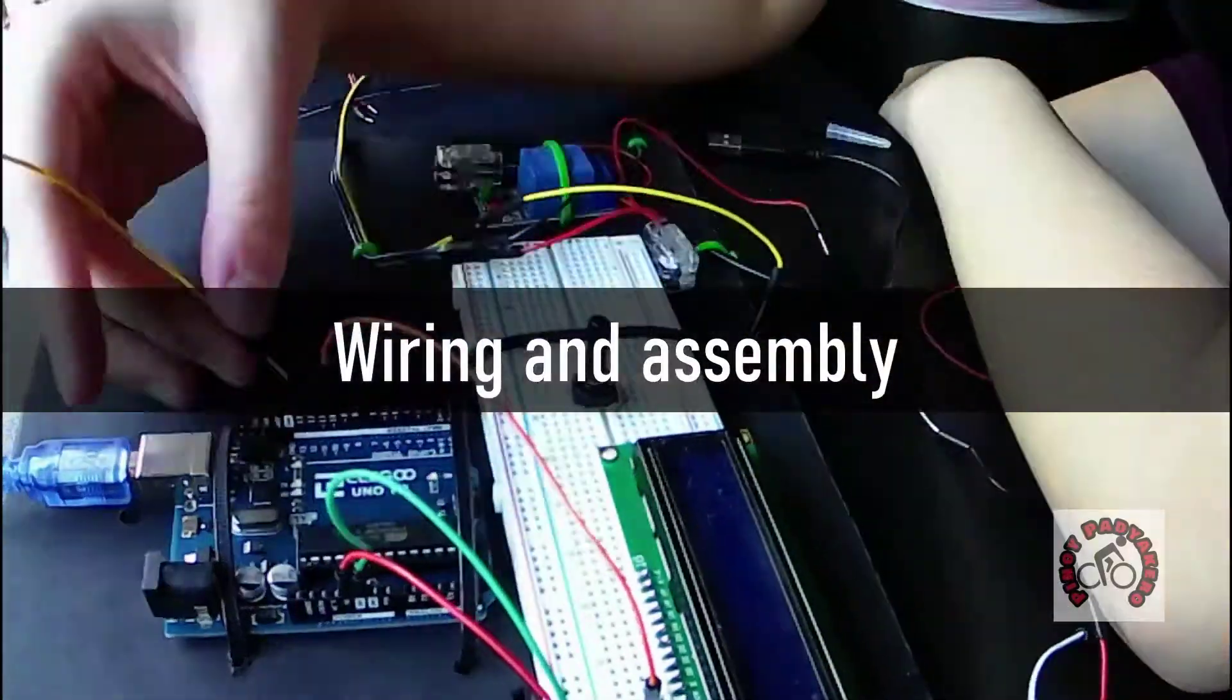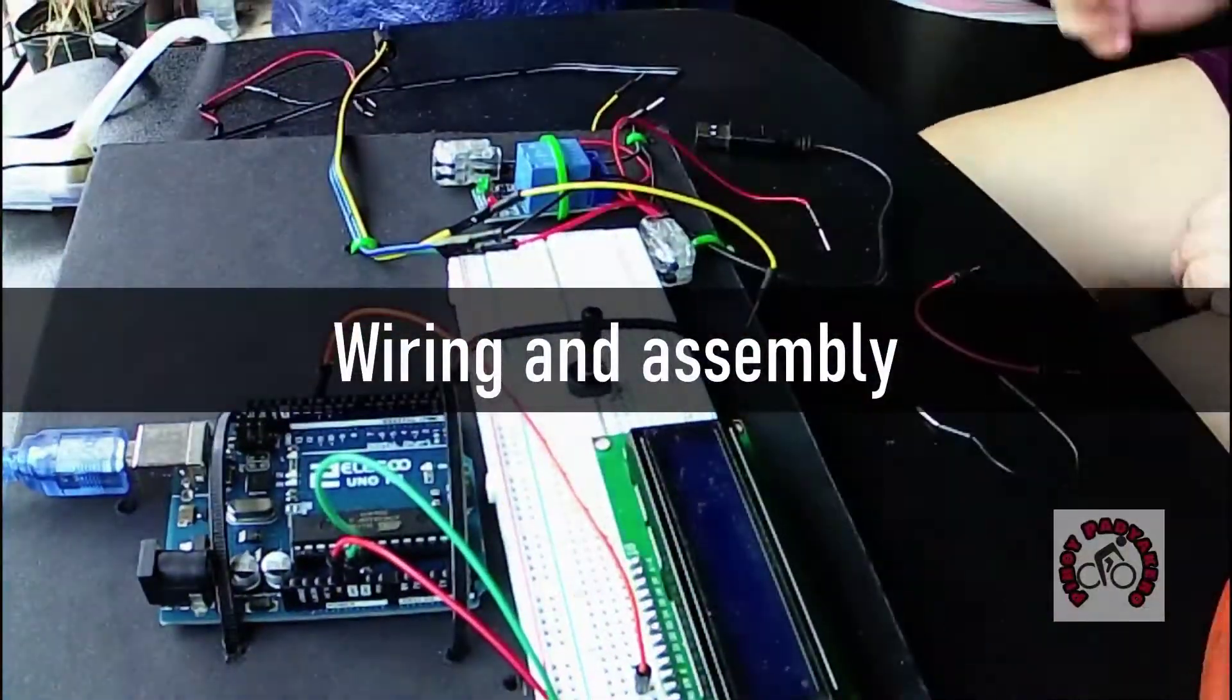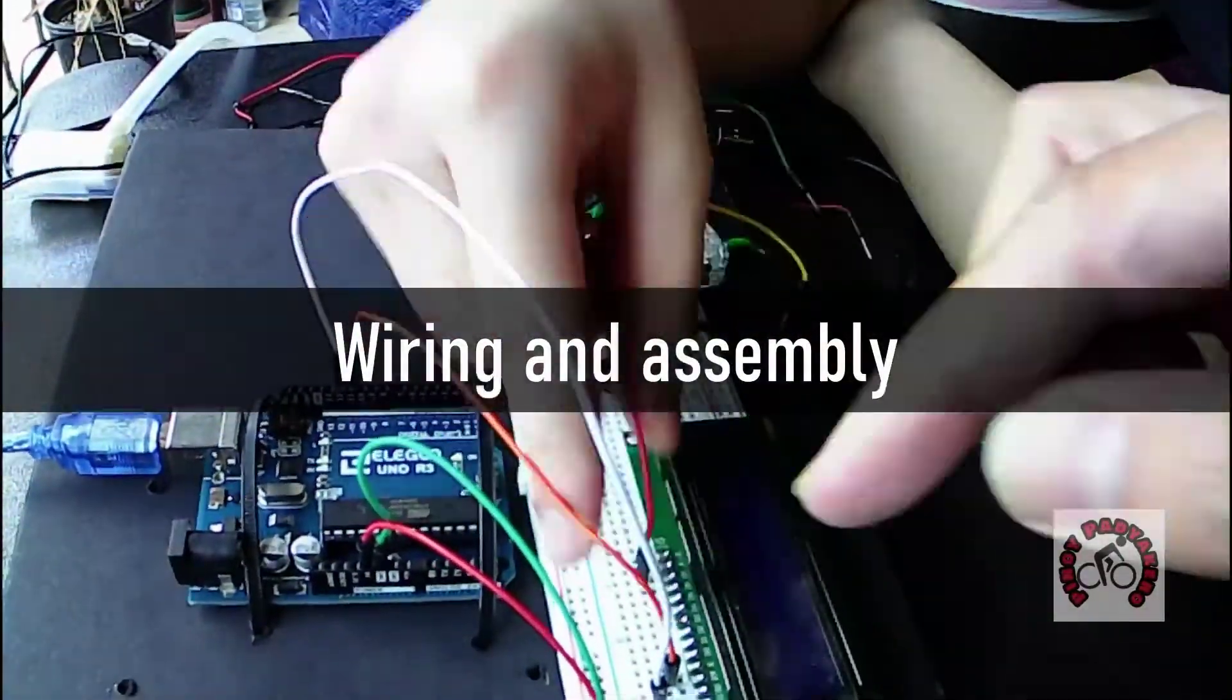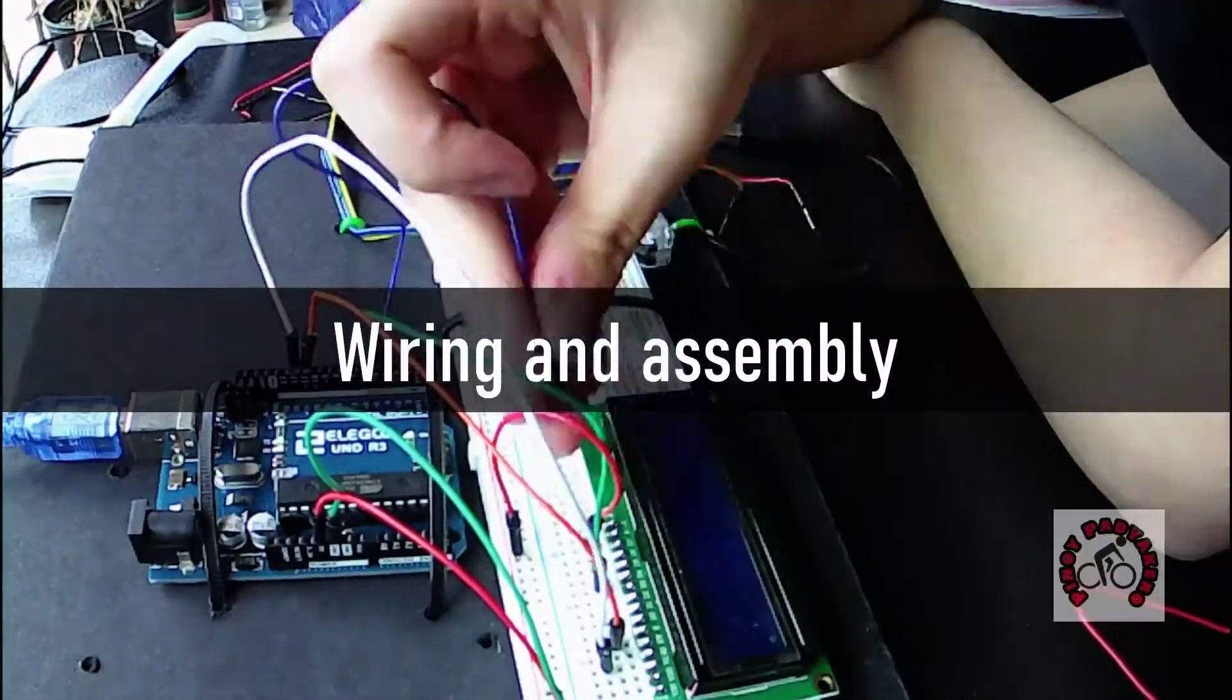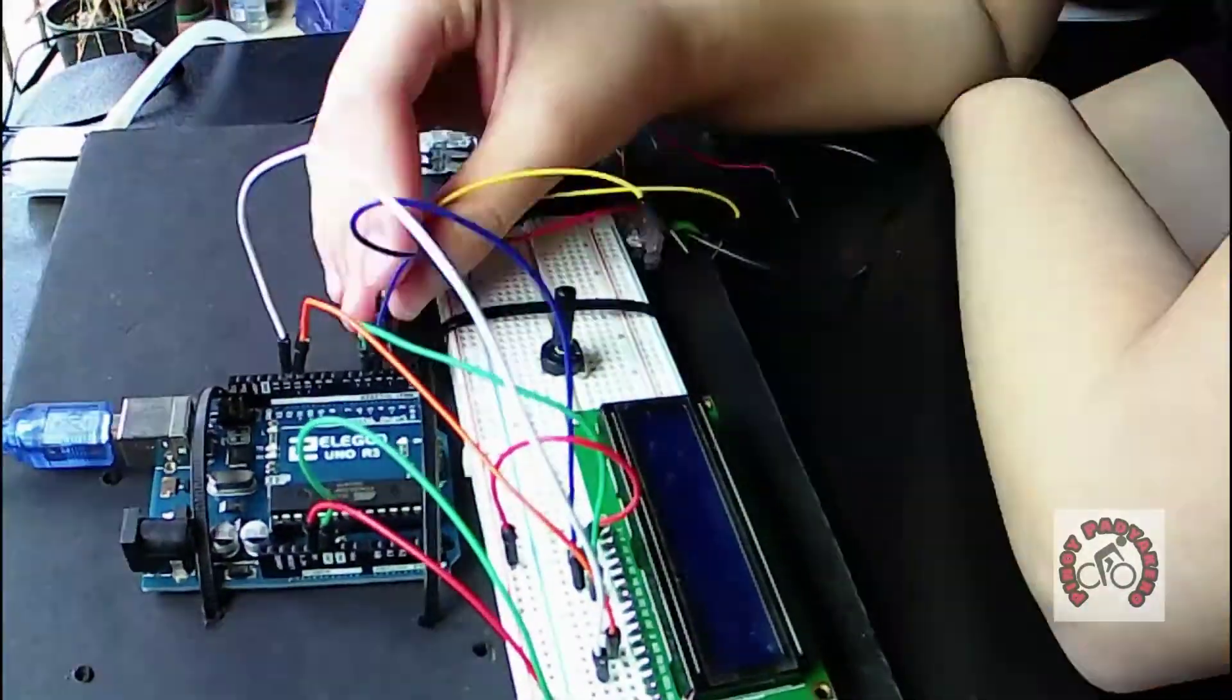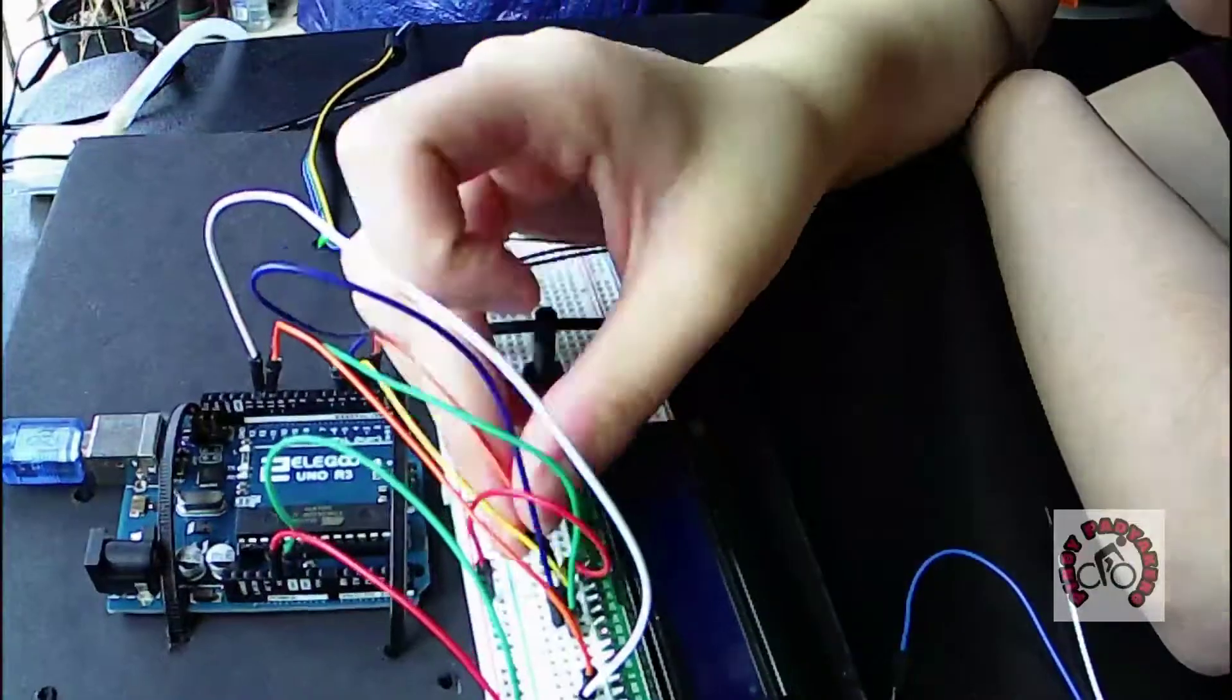Wiring and assembly. Refer to the documentation that comes with the Arduino system that you bought. In my case, I bought an Elego Uno Arduino clone kit that has a CD that comes with this documentation in PDF format.